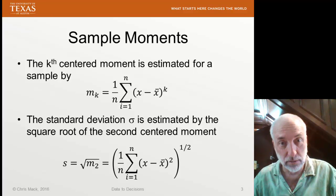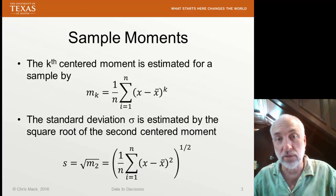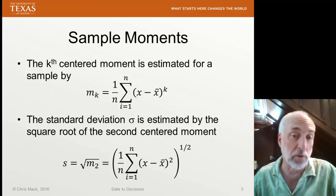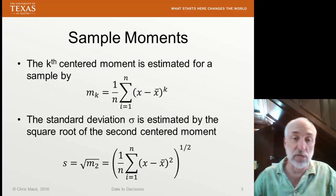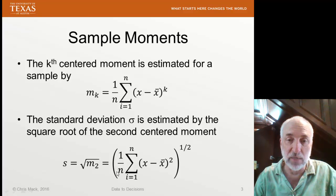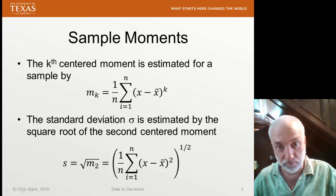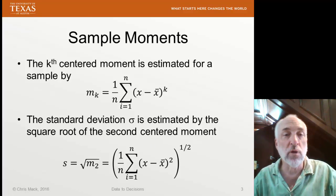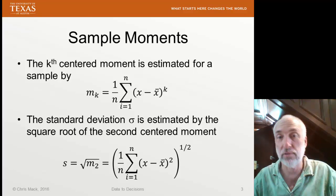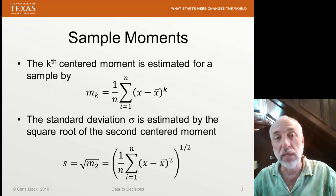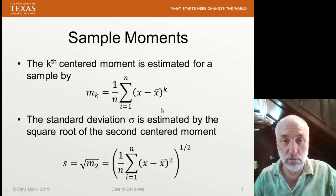If we have the second centered moment, that means k equals 2, and we have our standard equation for the variance. The square root of that variance is the standard deviation. It's biased because we divide by n instead of n minus 1, but nonetheless this is our estimator for the standard deviation. Therefore, our estimator for the standardized kth moment will be this equation divided by the standard deviation estimator to the kth power.